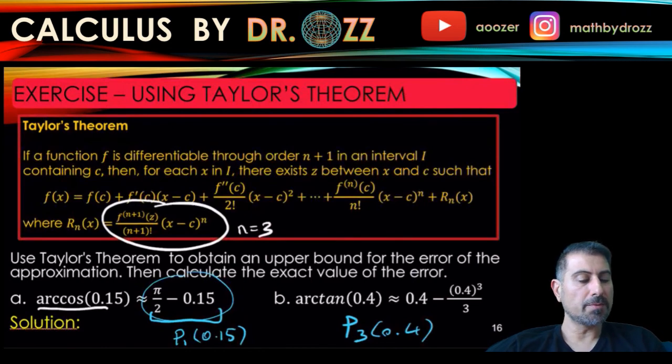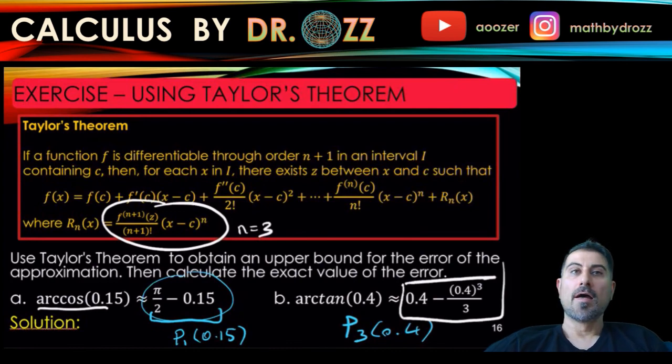This was a long question and a lot of complicated expressions, but I hope you get the point of using Taylor's theorem to find the upper bound for the error in the approximation. I'll see you in another video.